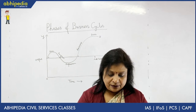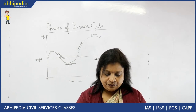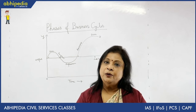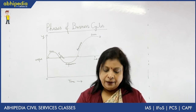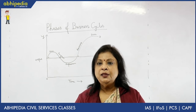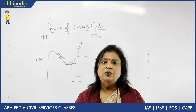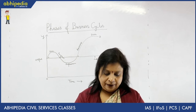Built-in stabilizers start operating in the system automatically — they are basically shock absorbers that reduce the intensity of the business cycle. Discretionary measures, on the other hand, are measures specially undertaken by the government to control the various phases of the trade cycle.